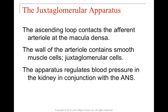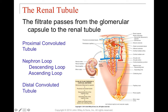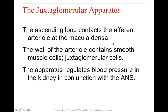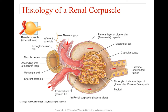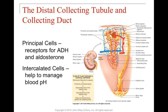The ascending loop of the juxtaglomerular apparatus connects the efferent arteriole at the macula densa. The wall of that arteriole contains smooth muscle cells called juxtaglomerular cells. This whole apparatus regulates both blood pressure and the amount of urination in conjunction with the autonomic nervous system — parasympathetic and sympathetic responses are very important here. We also have receptors for ADH and aldosterone, and intercalated cells that help manage blood pH.